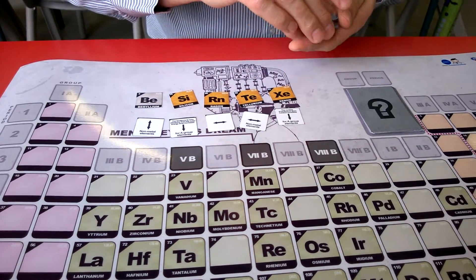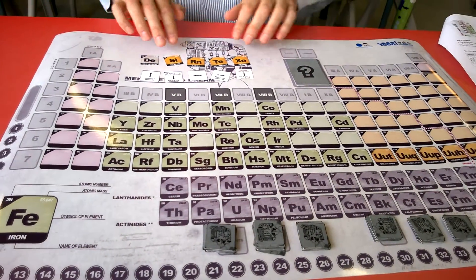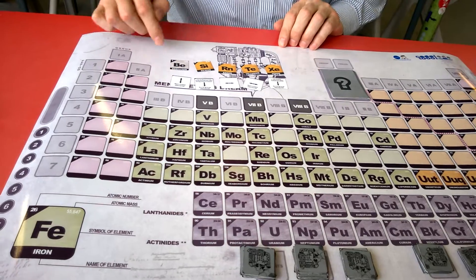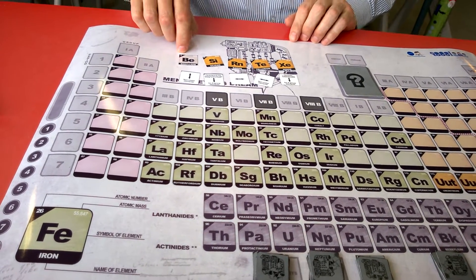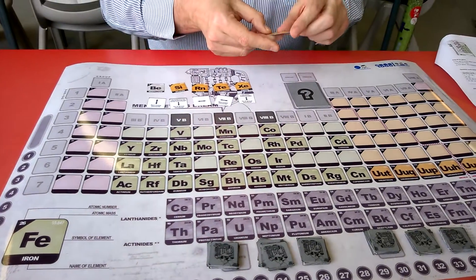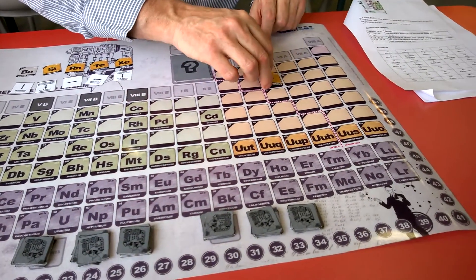The player who starts will be decided by the player who has the element with the lowest atomic number, so if I was a player with the lowest atomic number I would start by taking another element card from the pile and placing it in the correct position on the board, which is element number 15, Phosphorus.